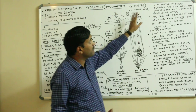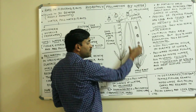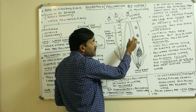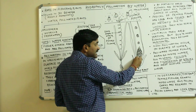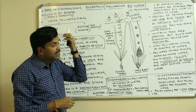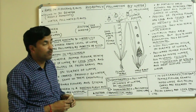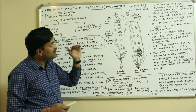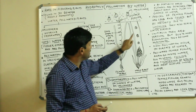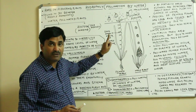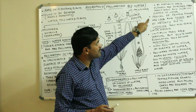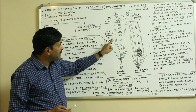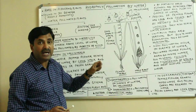At maturity, the male flowers are detached from the parent plant and float on the surface of the water. At the same time, the pedicel — that is, the stalk of the female flower — is long and coiled, as you can see in the diagram.